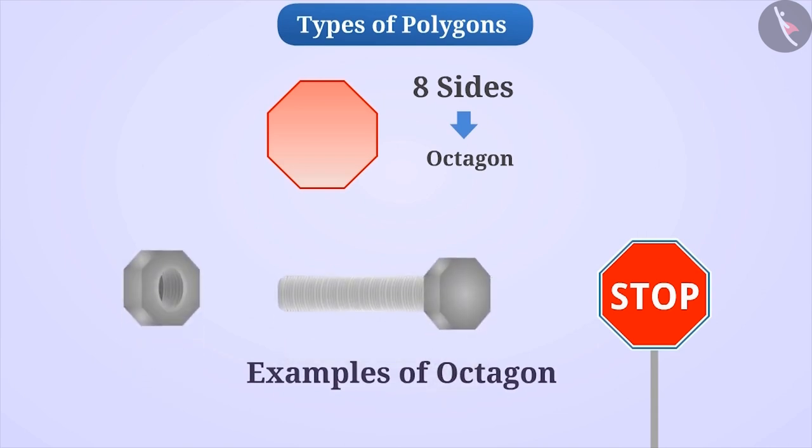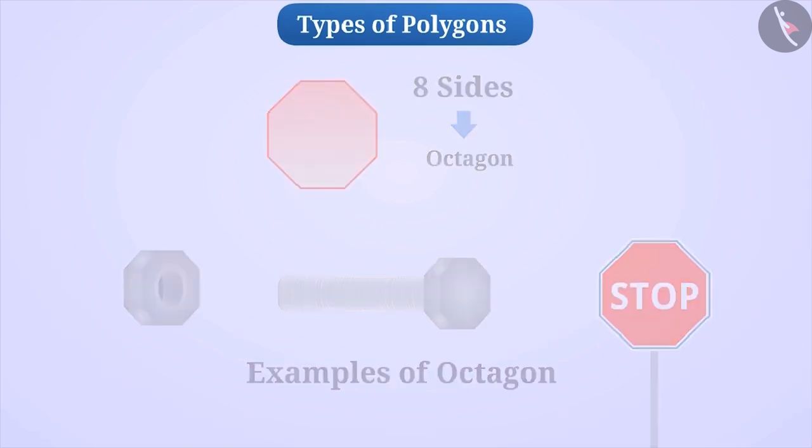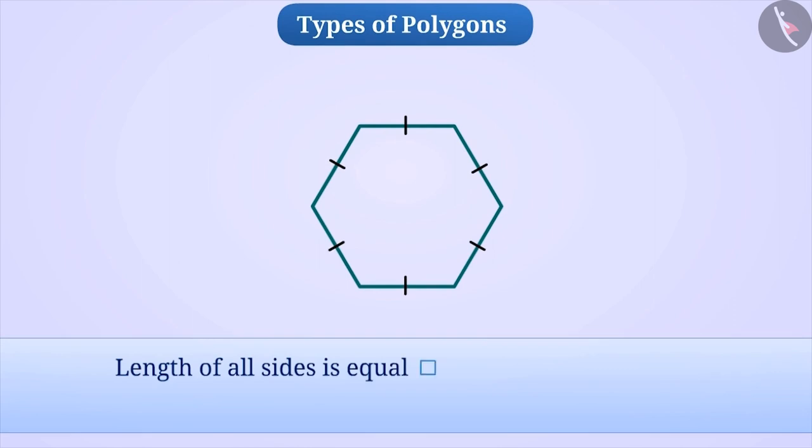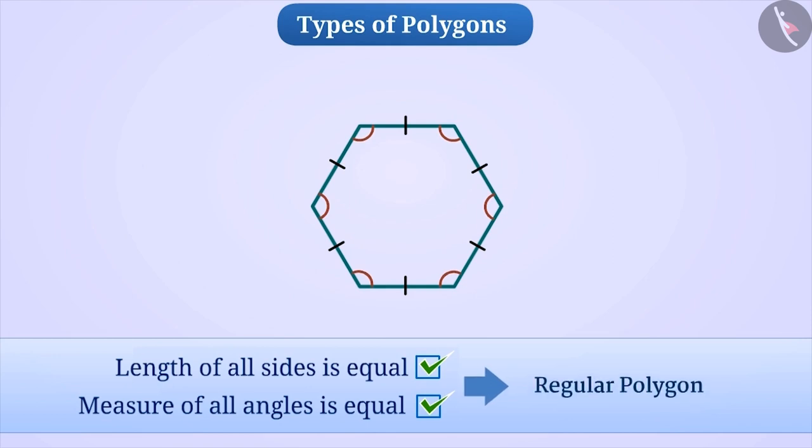Polygons can be classified in another way. Look at this polygon. Here, the length of all sides is the same. Similarly, the measure of all the angles is the same. A polygon with all sides equal and all the angles equal is called a regular polygon. Like, this is a regular hexagon.